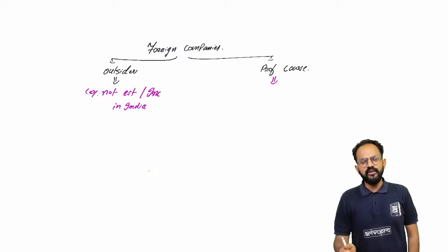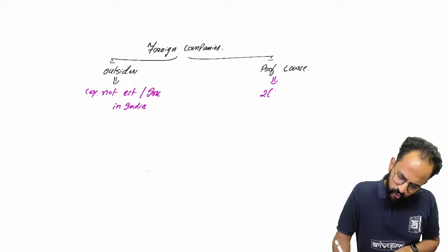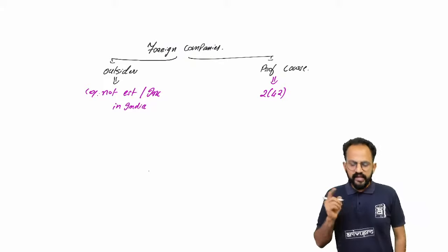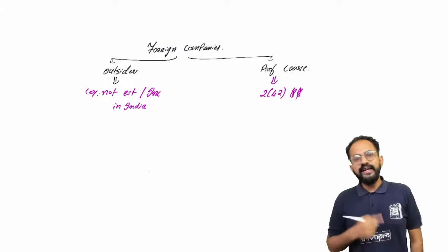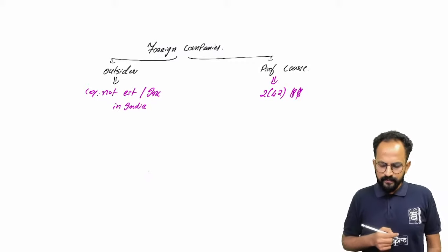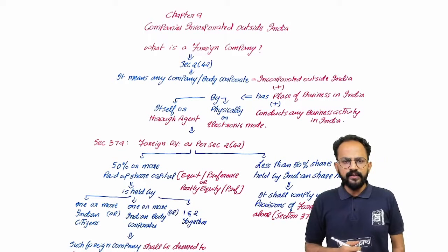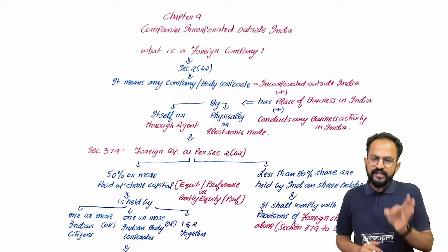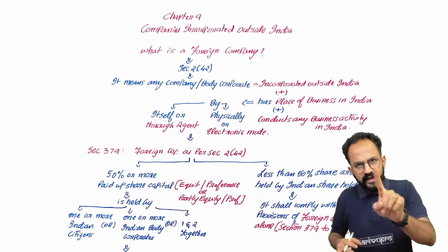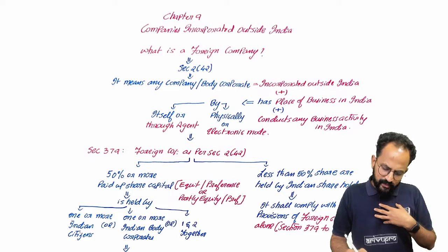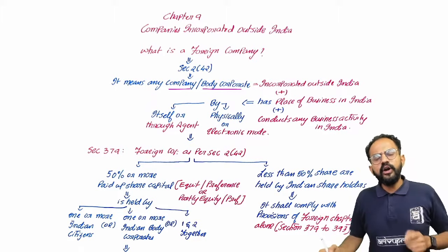The definition of foreign company is very very important. It is given under Section 2, subsection 42 of the Companies Act. Remember the definition section as well — Section 2(42) defines what is a foreign company. I have prepared a chart for you. As per company law, a foreign company means a company or a body corporate.